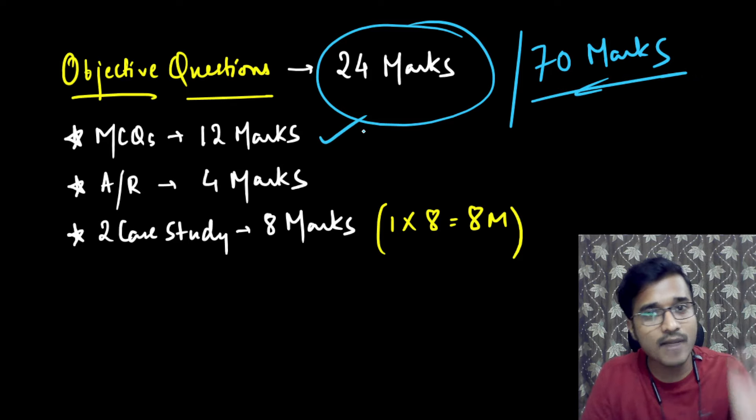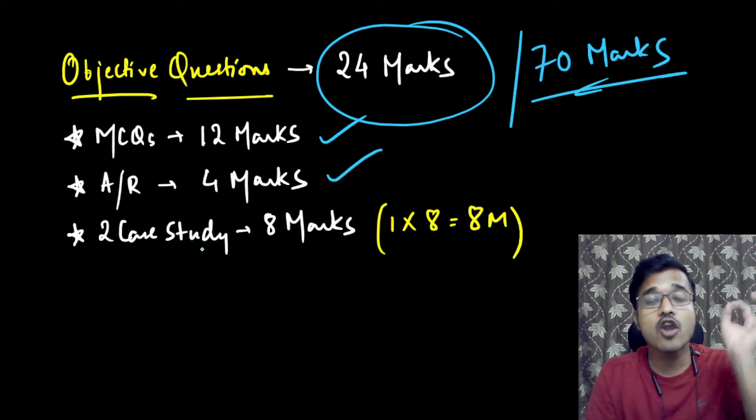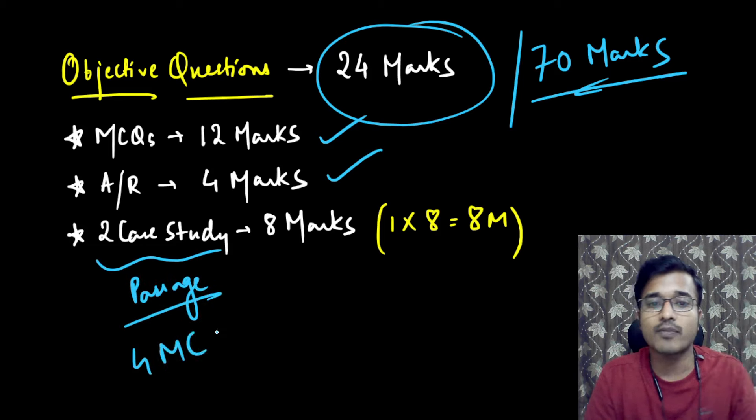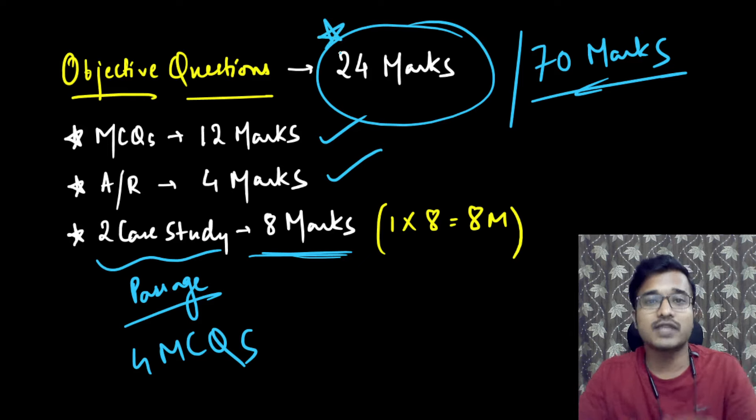MCQs will be 12 marks, Assertion Reasoning will be 4 marks, and with this two case studies you will get to see. In which you will have passage given, and with that you will get to see 4 MCQs. So the total is 2 case studies, or the total is 8 MCQs. So 8 marks you will also get to see. This means that if you add all these objective questions, 24 marks then you will get.